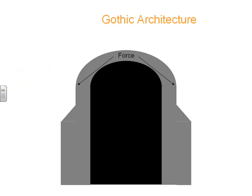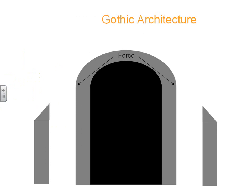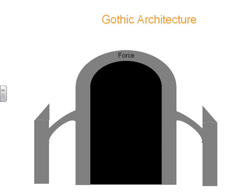Now let's go to Gothic architecture. We still have our buttresses, but what we're going to do is actually move those out. Now that they're gone, our walls are weak again, so we have to do something to take that force off the wall. We're going to put arches connecting these buttresses to the wall — these are called flying buttresses. That will do its job and take away the pressure on that wall. In fact, the force will actually move down across the flying buttress and down to the foundation.